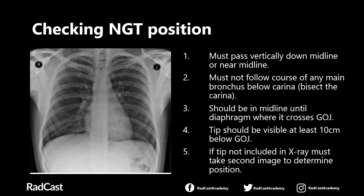Starting at the beginning: the nasogastric tube needs to pass vertically down the midline or near the midline. It may not be straight in the middle, but more or less in the midline. This just tells you that it's passing down a vertical midline structure. Hopefully it's the oesophagus, but it could well be the trachea at this point, as was the case in the example we put up.